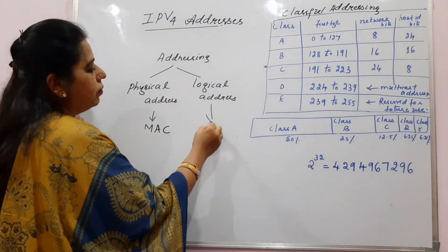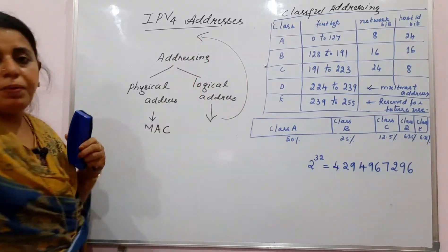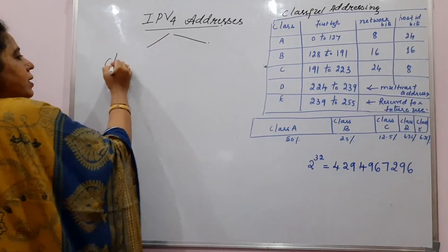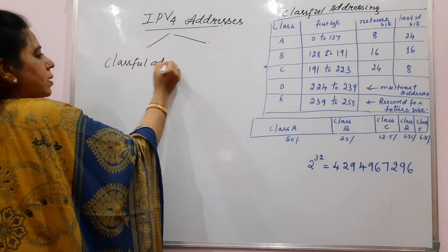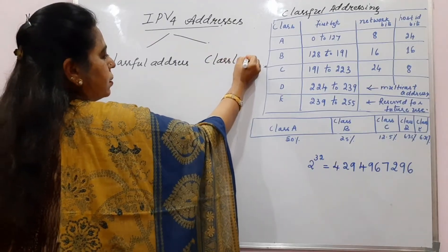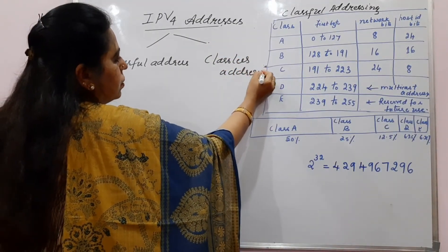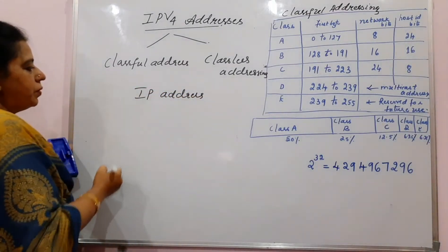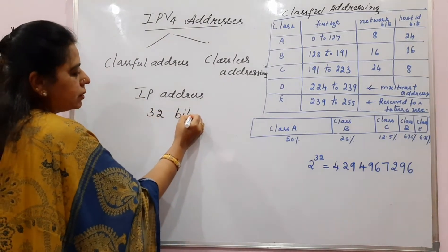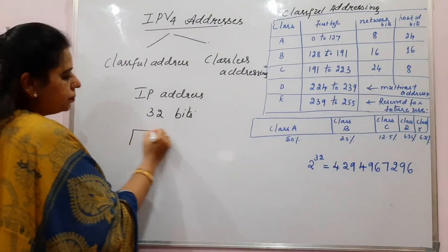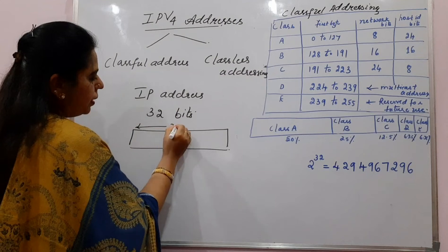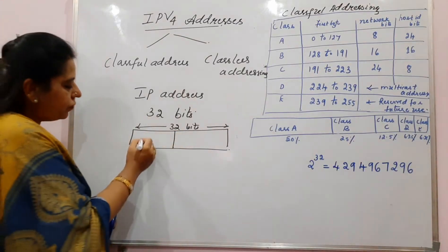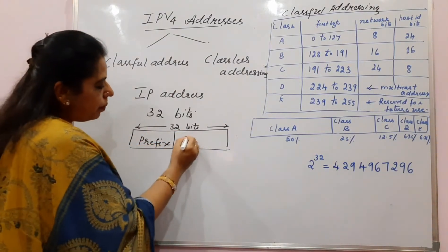That is where we study IPv4 addresses. IPv4 addresses are classified into two types: one is classful addressing and another is classless addressing. IP stands for Internet Protocol, and an IP address consists of 32 bits. This 32-bit IP address is divided into two parts: one part is called the prefix and the other is called the suffix.